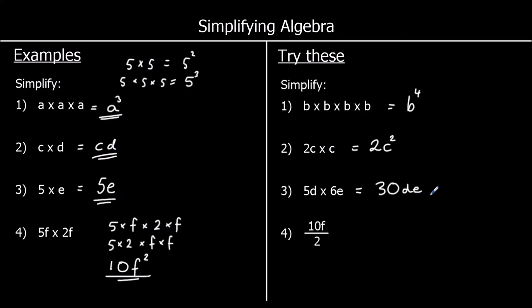Question 4: we've got 10f divided by 2 — 10 lots of f divided by 2. What is half of 10 lots of f? That's 5 lots of f, so the answer is 5f.